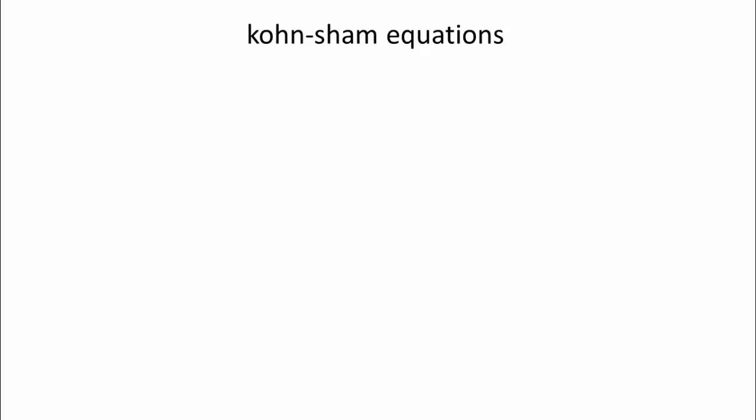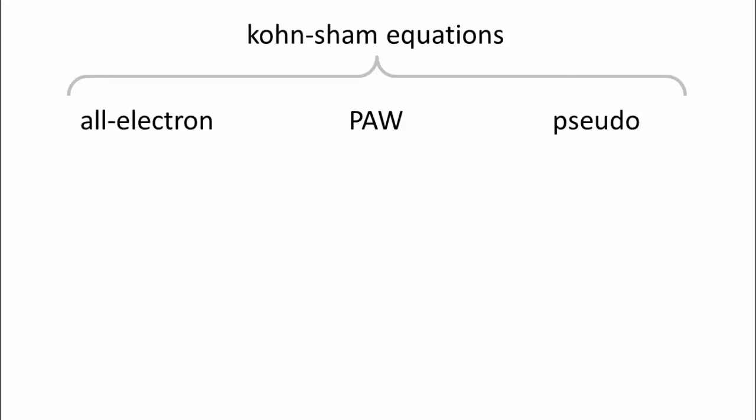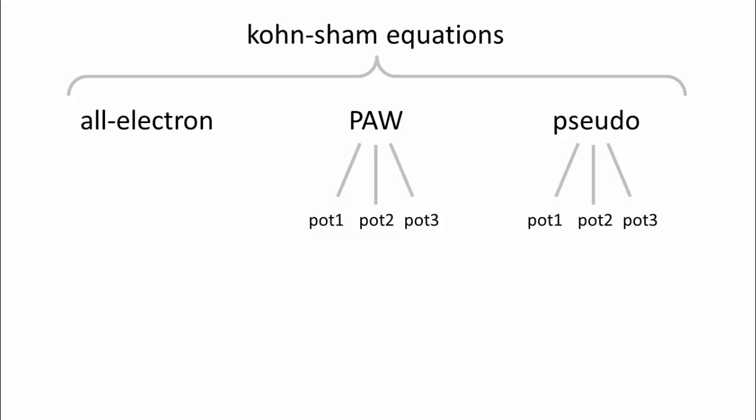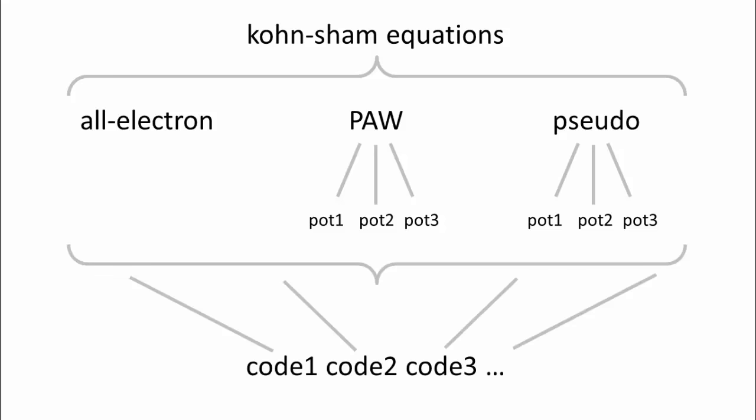I often talk to experimentalists and tell them what we do in the DFT community — I will only talk about DFT here, not beyond. What we do in the DFT community is solving the Kohn-Sham equations, and unlike a pocket calculator that has one algorithm, for the Kohn-Sham equations we have many algorithms. Roughly we can divide them into all-electron, PAW, and pseudopotential methods, each with element-specific choices for projector functions or pseudopotentials, and different basis sets.